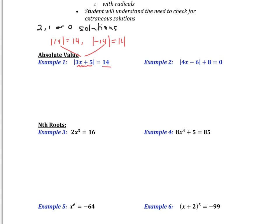So we have to create two equations. 3x plus 5 equals 14. We solve for this by subtracting 5 and getting 9, dividing by 3, and getting x equal to 3. It's a good idea to always substitute back in to make sure it works. 3 times 3 is 9, plus 5 is 14, absolute value is 14 — it works.